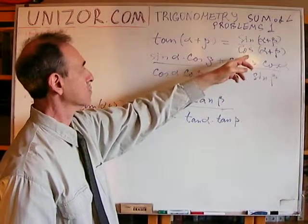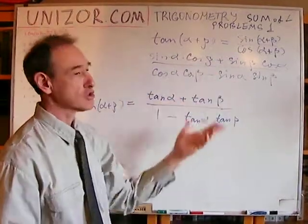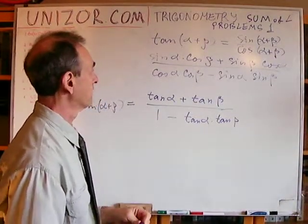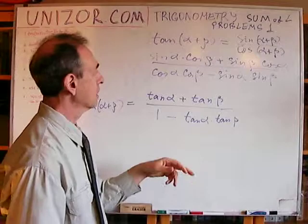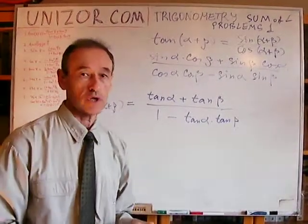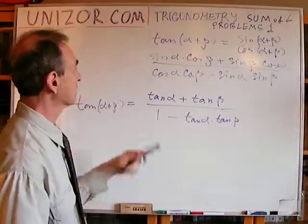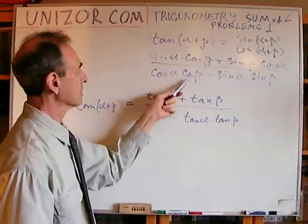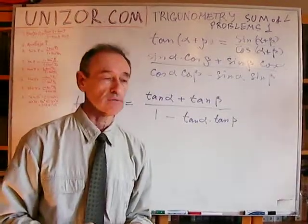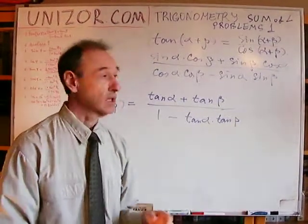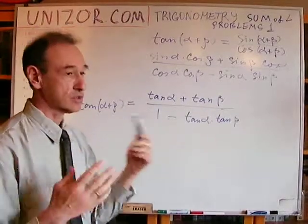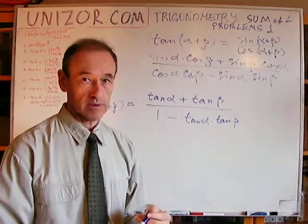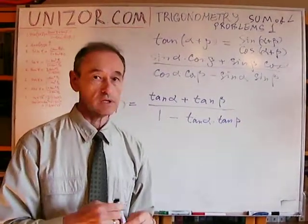I just used the definition of tangent, then the expressions for sine and cosine of the sum of two angles. The only little trick was to divide the numerator and denominator by the same product cosine alpha times cosine beta. This formula is valid wherever alpha, beta, and alpha plus beta have defined tangents — and you know that with tangent, that's not always the case.